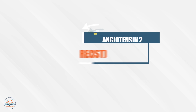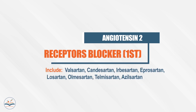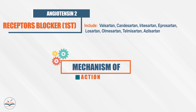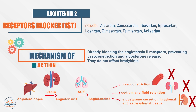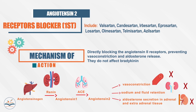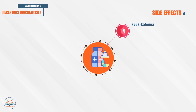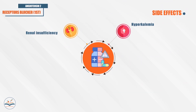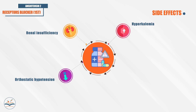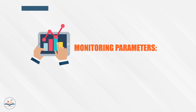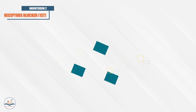Angiotensin II receptor blockers (ARBs), like valsartan and candesartan, directly block the angiotensin II receptor, preventing vasoconstriction and aldosterone release. They do not affect bradykinin. Side effects include hyperkalemia, renal insufficiency, orthostatic hypotension, and increased insulin resistance. We have to monitor potassium level and renal function.